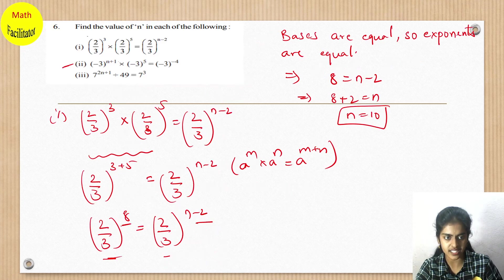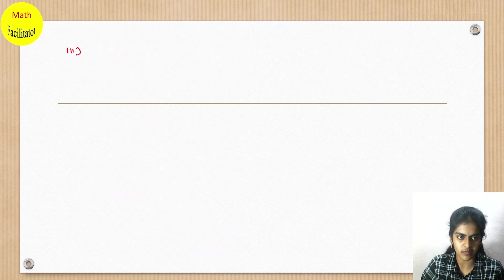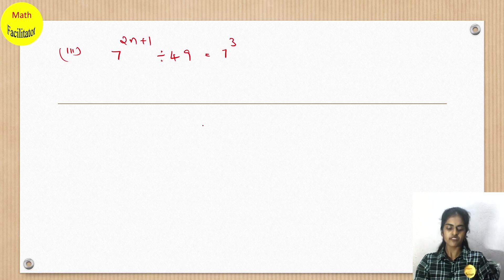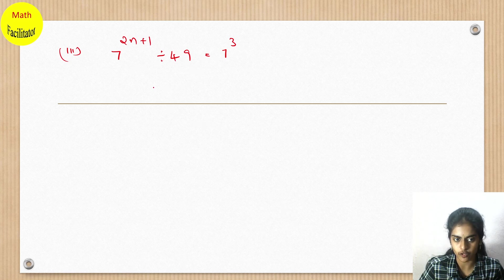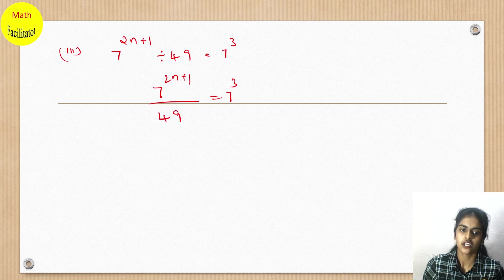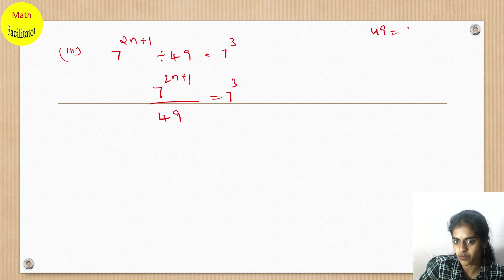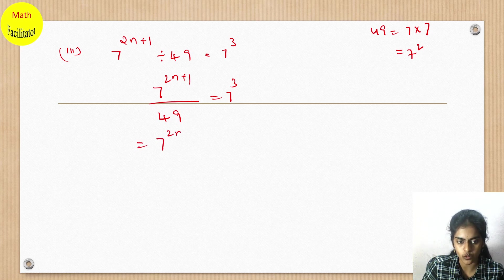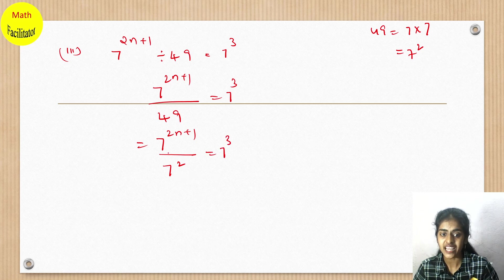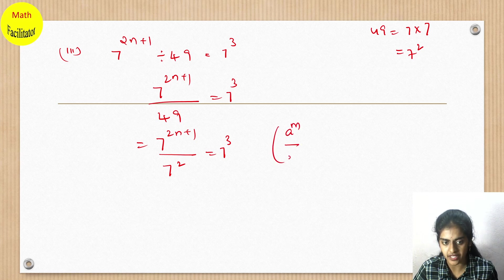The third part: 7^(2n+1) divided by 49 equals 7³. We write this as 7^(2n+1) ÷ 7² equals 7³, since 49 equals 7². The LHS is of the form a^m ÷ a^n, which equals a^(m-n).